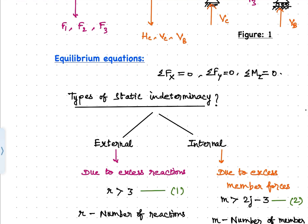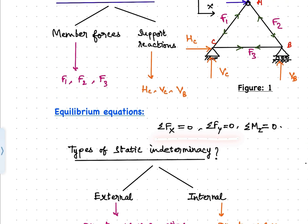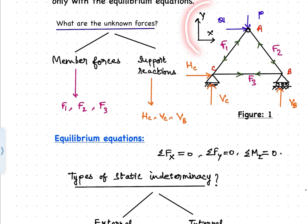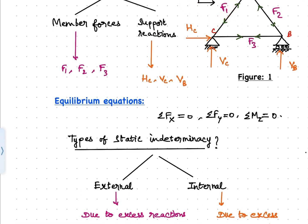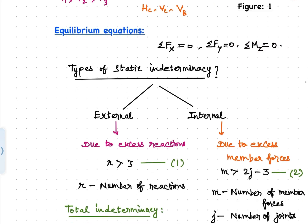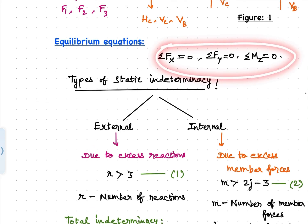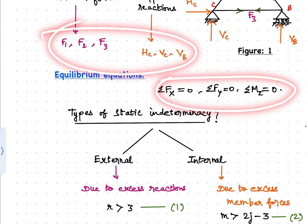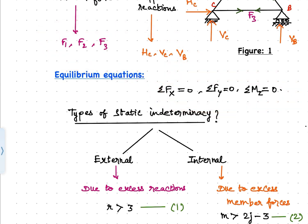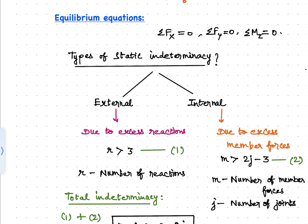The equilibrium equations for a planar system are as follows: the sum of forces in each orthogonal direction should be equal to zero. Since this truss is contained in the XY plane, the sum of moments about the Z axis should also equal zero for equilibrium. If these equilibrium equations are sufficient to solve for all the unknown forces, then the structure is statically determinate; otherwise, it is statically indeterminate.